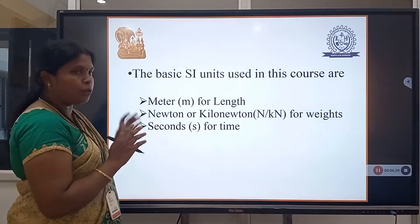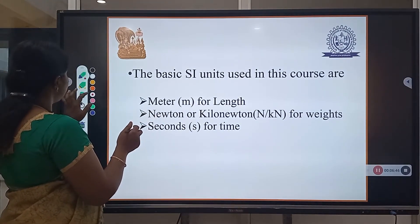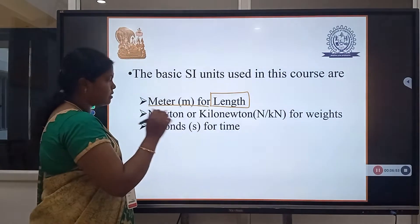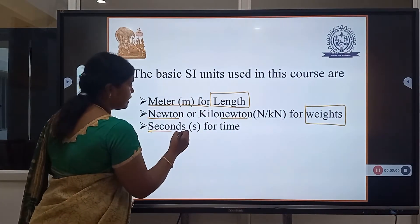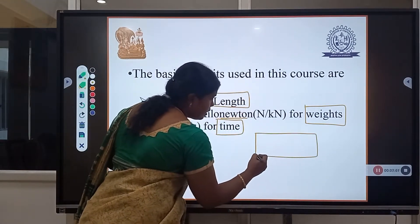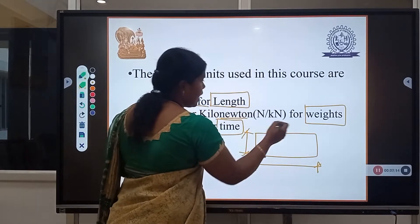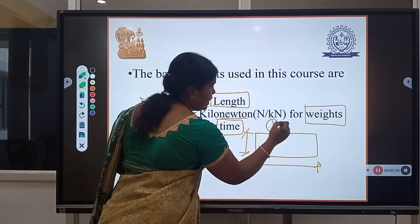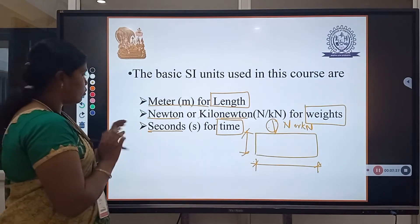The basic units we are going to use in this first unit: meter, used for measuring length — horizontal or vertical length of the material. Newton or kilonewton will be used for weight and load calculations. Seconds is used for time calculation. The load applied on the material will be indicated in newtons or kilonewtons. These are the basic units we are going to use in this topic.